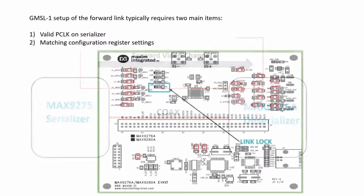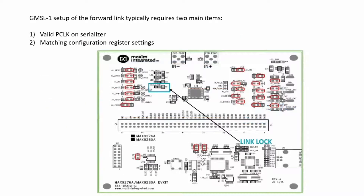To get your forward video channel working perfectly fine, you should have two things: the first one is a valid pixel clock on the Serializer, and the next one is matching configuration register settings.